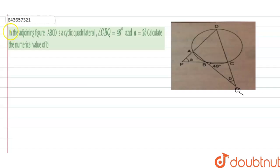Hello everyone. The question is: in the adjoining figure, ABCD is a cyclic quadrilateral, where angle CBQ is 48 degrees, A equals 2B. Find the numerical value of B.